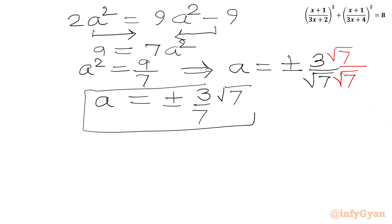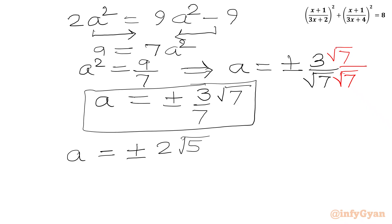So writing all four a values: a equals plus or minus 2 root 5 over 5, and plus or minus 3 root 7 over 7.